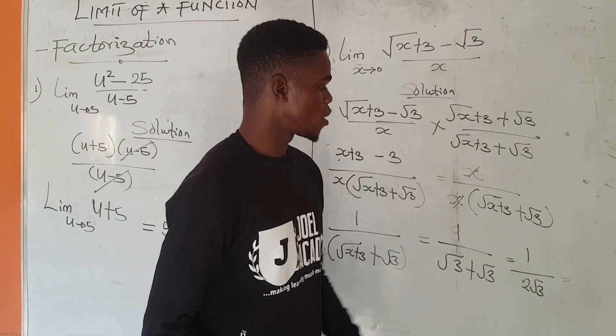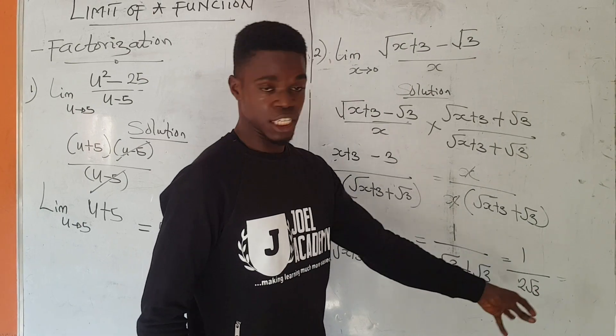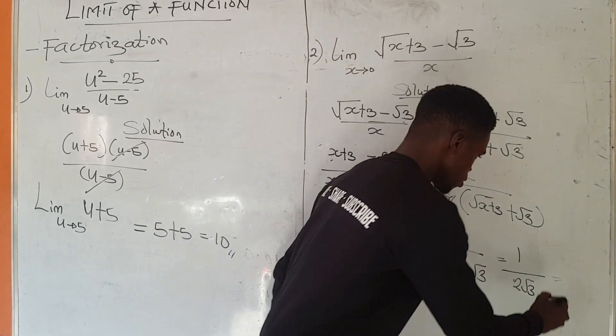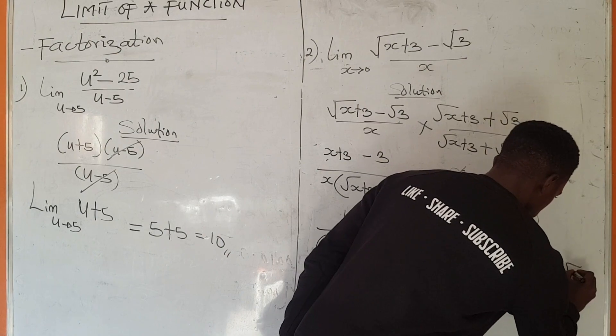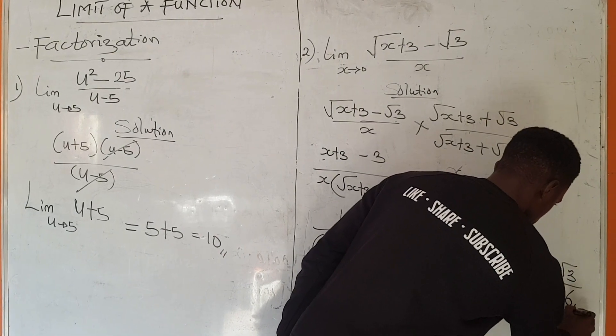Finally from this point, all we need to do is just to rationalize this again. If you rationalize this, we end up having 2 root of 3 over 6. That's the answer.